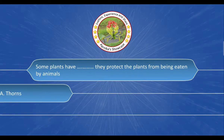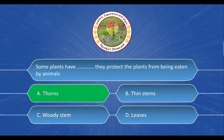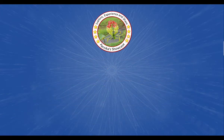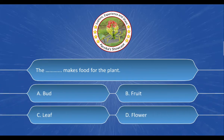Next question: Some plants have dash. They protect the plant from being eaten by animals. The options are A. Thorns, B. Thin Stems, C. Woody Stem, D. Leaves. And the correct answer is A. Thorns.